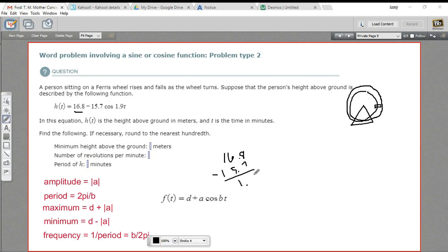And we're going to get 1.1. And this is in meters. So the minimum height above the ground is 1.1 meters.